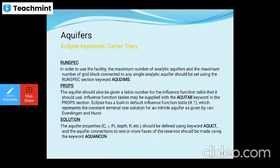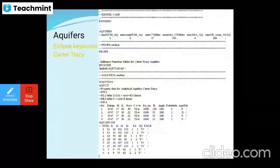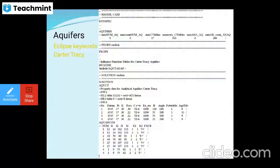For the Carter-Tracy aquifer, similarly in RUNSPEC you specify the maximum number of analytic aquifers and maximum grid blocks per aquifer. In the PROPS section, aquifer properties including depth, radius, density are defined. In the SOLUTION section, keywords such as AQUCT and AQUANCON are used. The Carter-Tracy aquifer input shows porosity, resistivity, angle, PVT table, AQUCT, and AQUANCON.